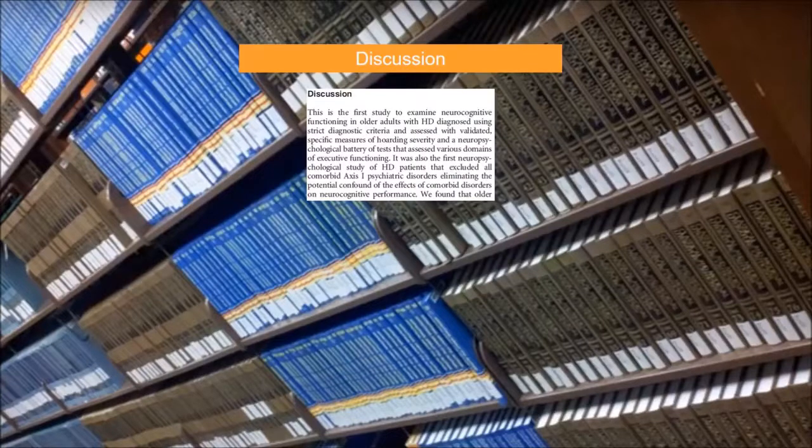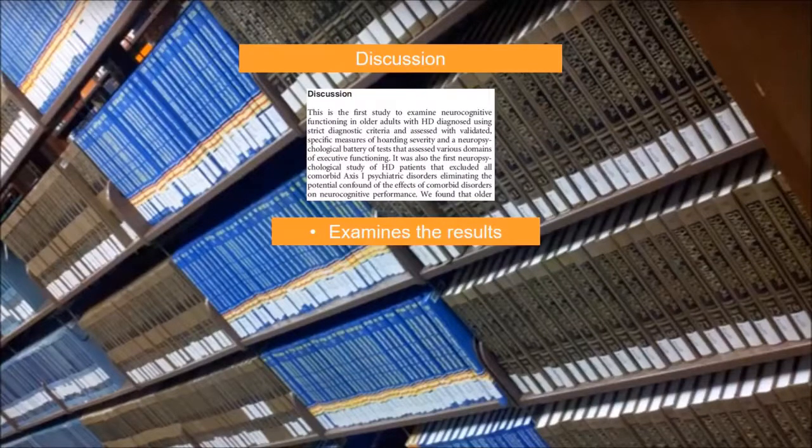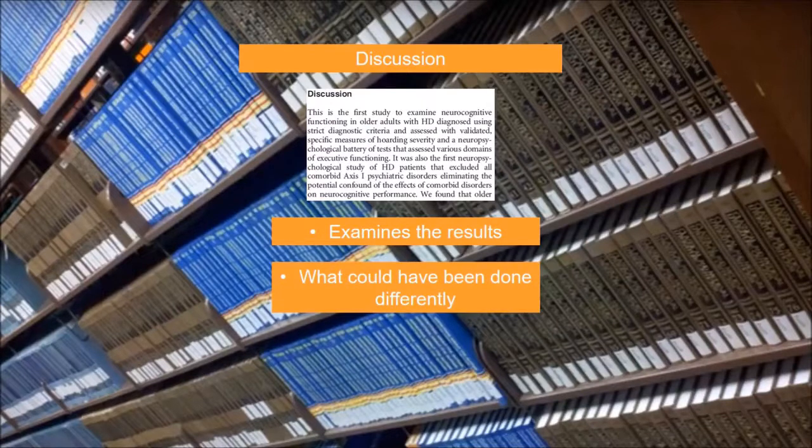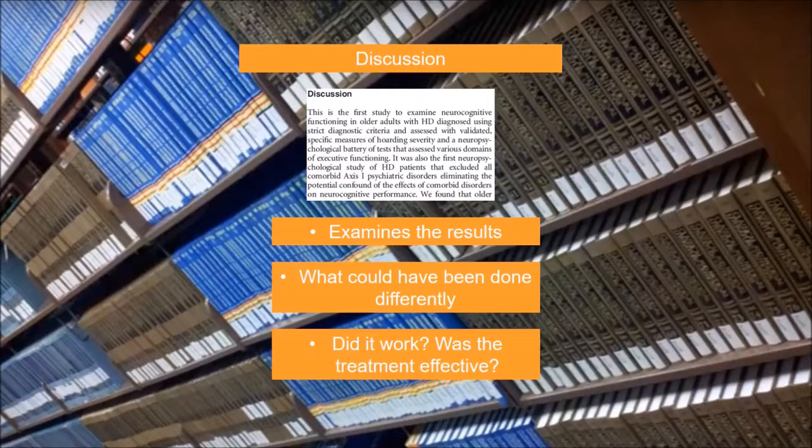The discussion section of an article examines the results of the study and what they mean. This includes what could have been done differently in the procedure or factors present in the experiment that could have skewed the results. This is where you can expect to learn whether the research proves that an intervention worked, for example.